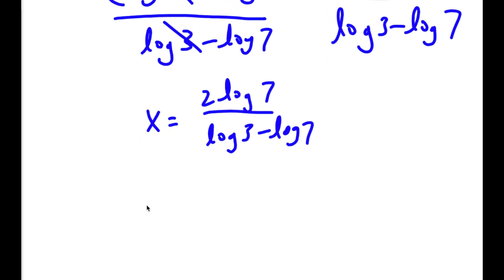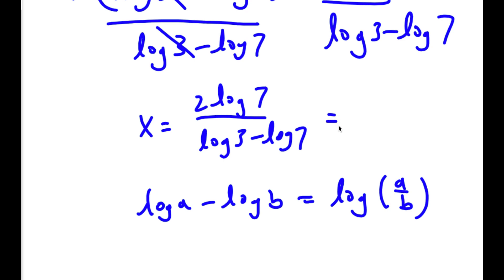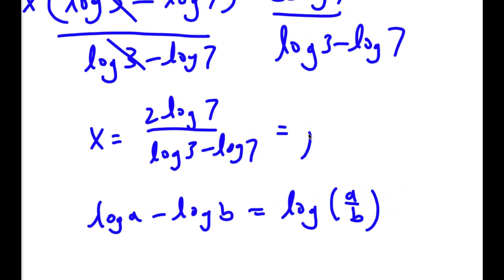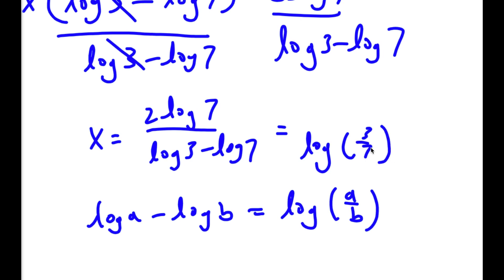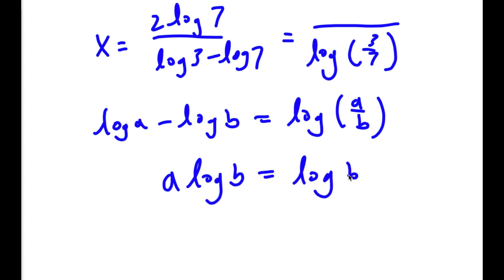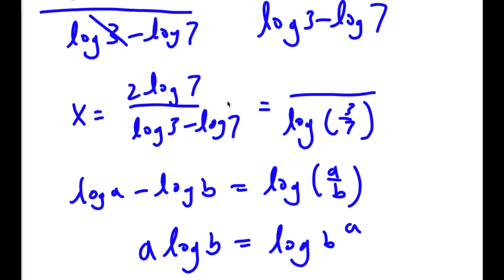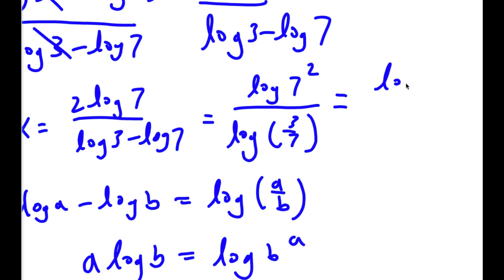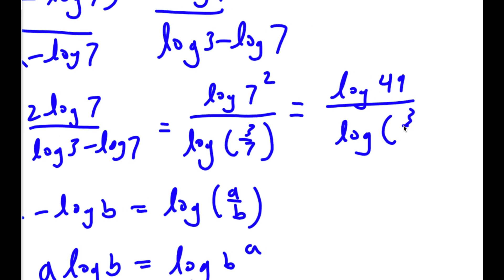If I have something in the form log a minus log b, this is the same thing as log a over b. So log 3 minus log 7 equals log 3 over 7. And if I have a times log b, this is the same thing as log b to the power of a — we can move the exponent to the front. So 2 times log 7 equals log 7 squared, which is log 49. So now I have x equals log 49 over log 3 over 7.